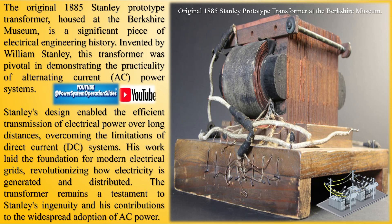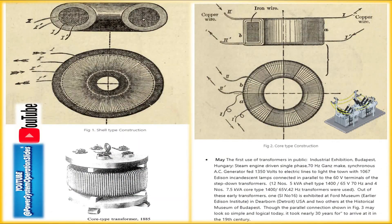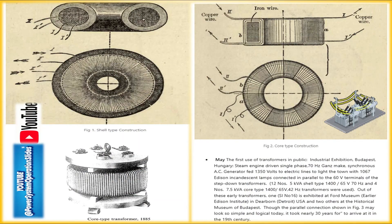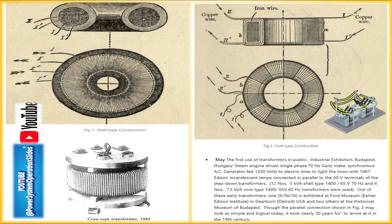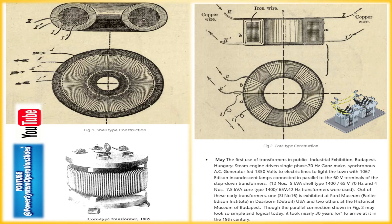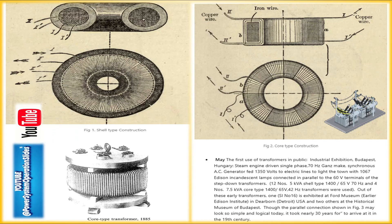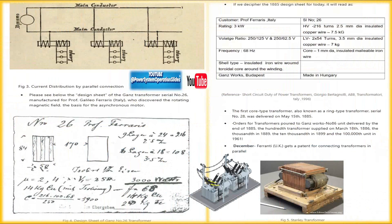George Simon Ohm formulated Ohm's law in 1825, linking current, voltage, and resistance. Michael Faraday's discovery of electromagnetic induction in 1831 led to the invention of the first transformer. Other contributors, such as Joseph Henry and Reverend Nicholas J. Callen, further enhanced the field of voltage generation through induction.